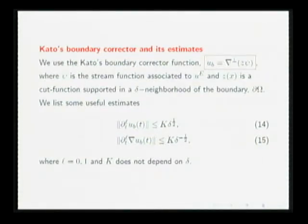To estimate i1, we use the Kato boundary corrector function, like u_b equals gradient perpendicular of z phi. Phi is the stream function associated to U, and z alpha is the cutoff function supporting a delta neighborhood of the boundary. By calculation, we obtain estimates 14 and 15. Notice that we need this time derivative estimate.